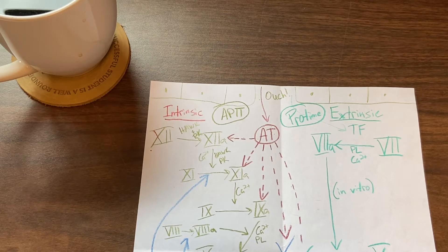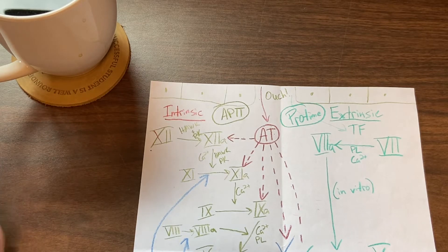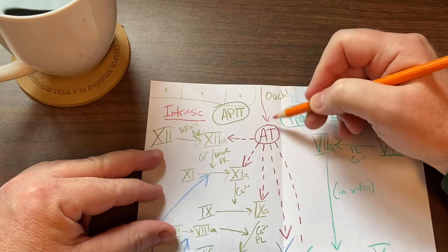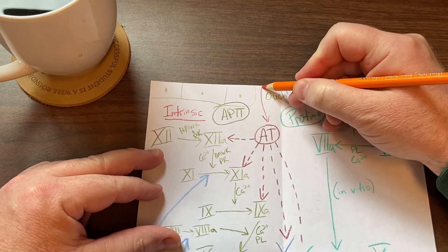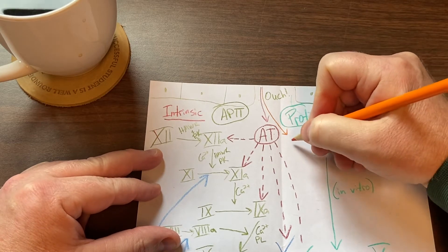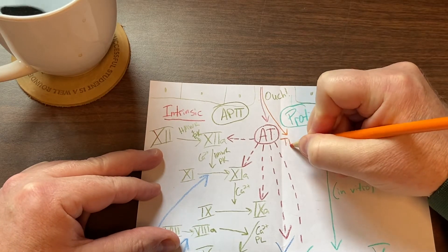The next step is tissue factor pathway inhibitor, or TFPI. TFPI is released from the endothelial just like antithrombin is. So I'm gonna draw that in here and I'm gonna put it right here as a tissue factor pathway inhibitor.